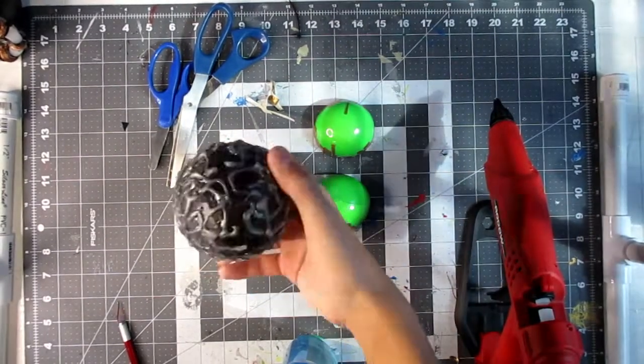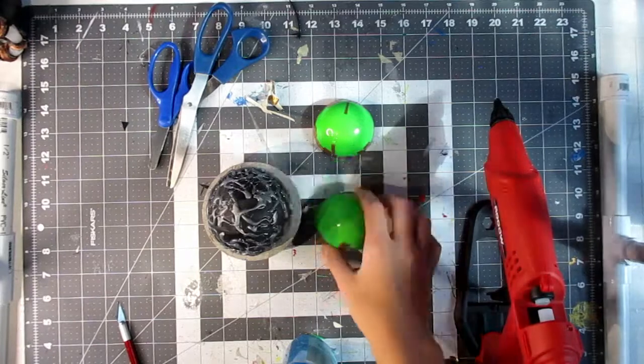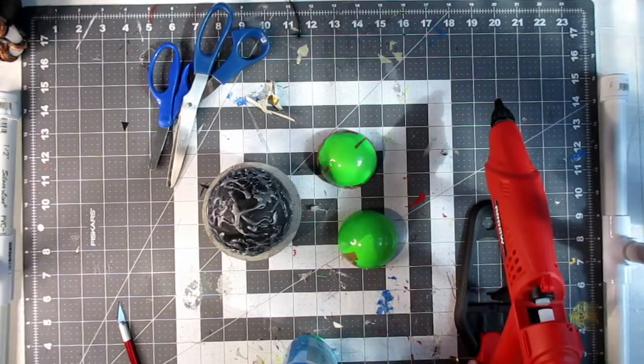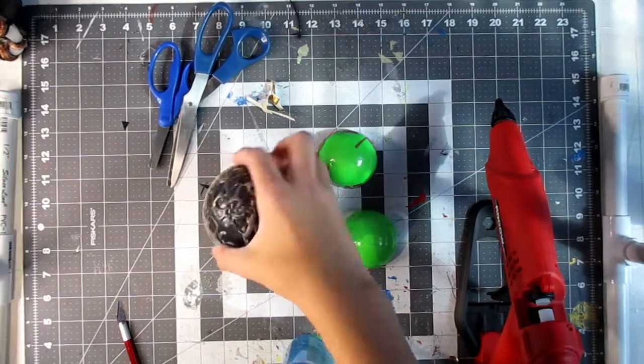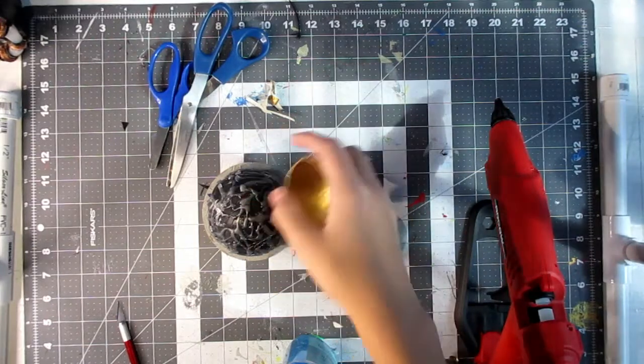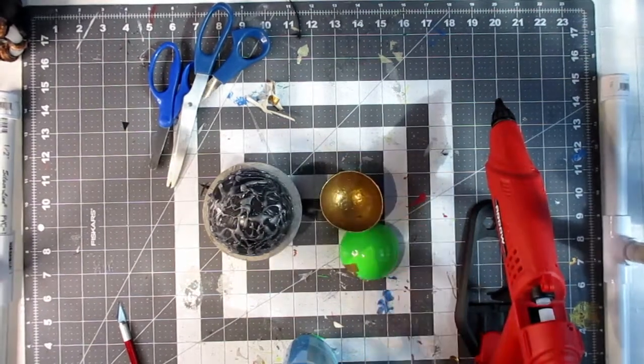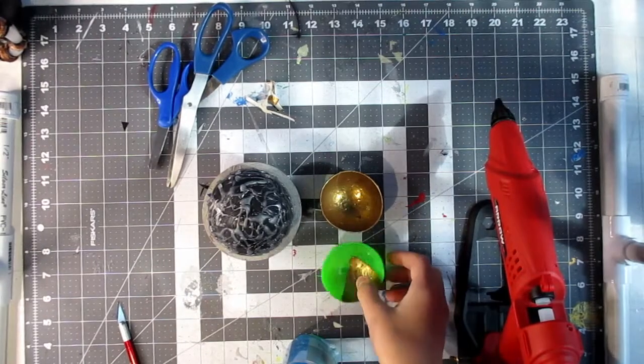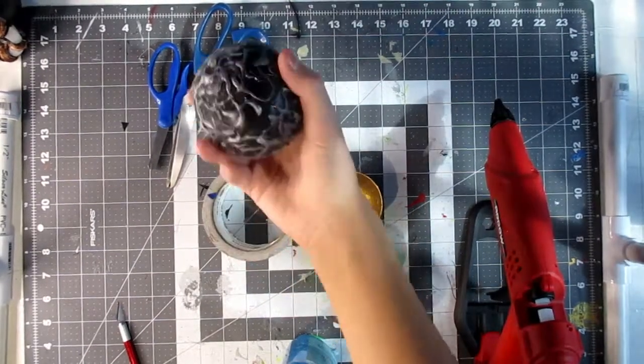I'm going to finish this one and then hot glue these two in. Then I'm going to make a ring thing that goes around this edge so that the thing will fit nicely in there. Then I'll make the Power Stone and this orb will be all done.